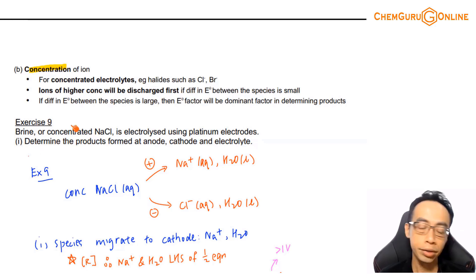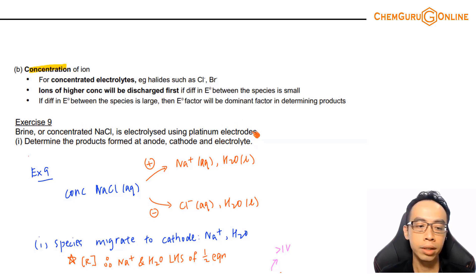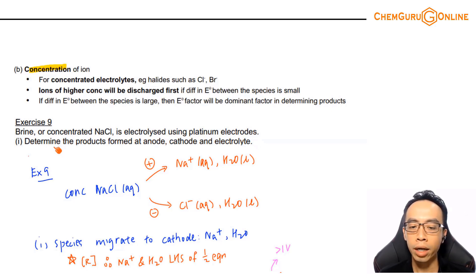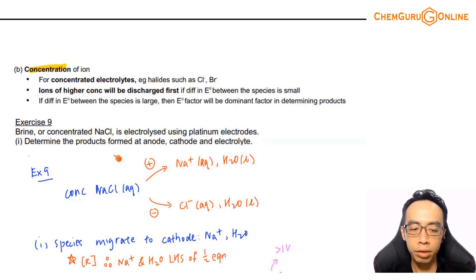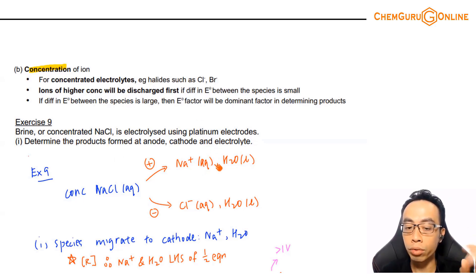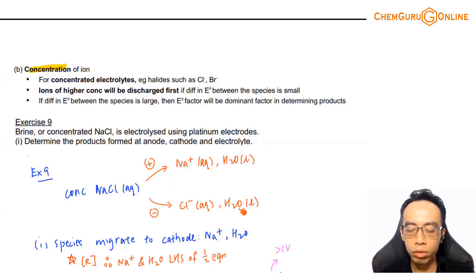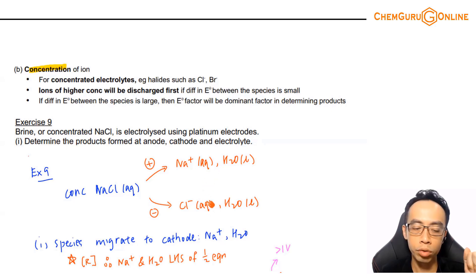Let's use Exercise 9 as an example. Brine, or concentrated sodium chloride electrolyte, using a platinum electrode. We want to determine the products at the anode and the cathode, and also the electrolyte in solution. If it is concentrated sodium chloride, the cation will be Na⁺. Concentrated means water is still present — this is aqueous, so we have to consider water as well as Cl⁻.